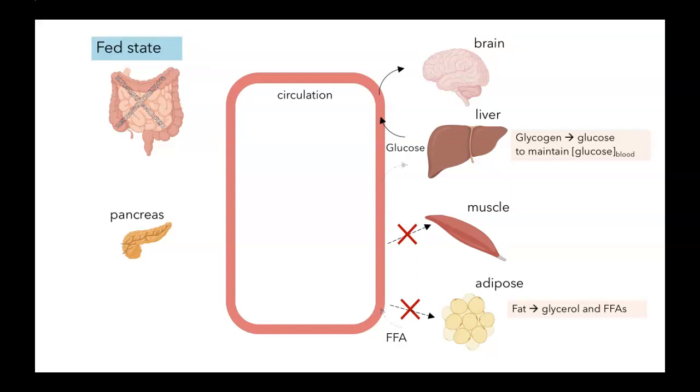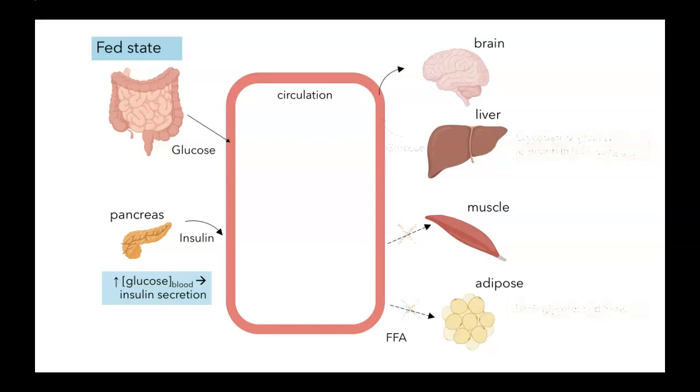What happens in the fed state? Under these circumstances, chances are that you are absorbing glucose from your digestive tract. The increased glucose in the blood will signal cells in the pancreas, the beta cells, to release insulin into the bloodstream. Then insulin can exert its effects on a whole bunch of different tissues. One of the things that insulin will do is it will promote glucose uptake in muscles and fat cells, the tissues that weren't taking it up before.